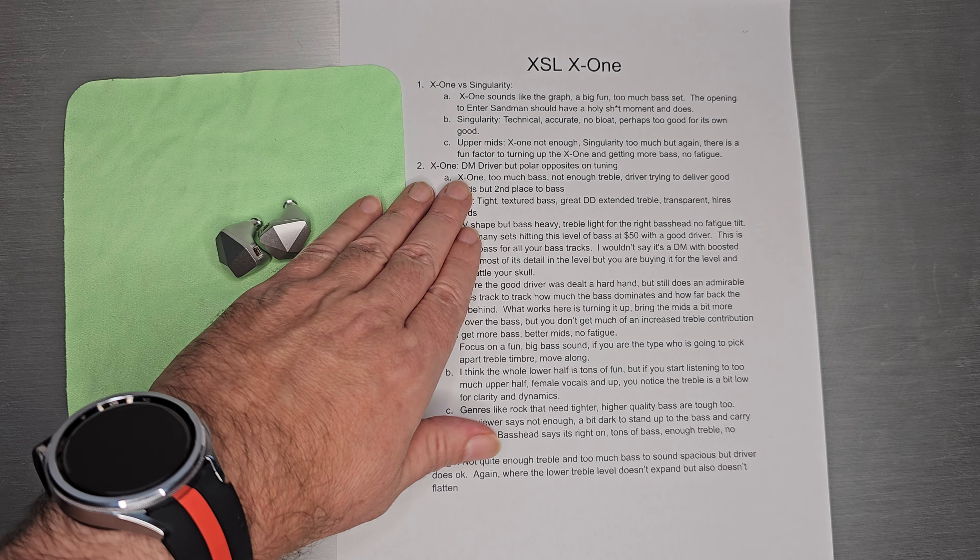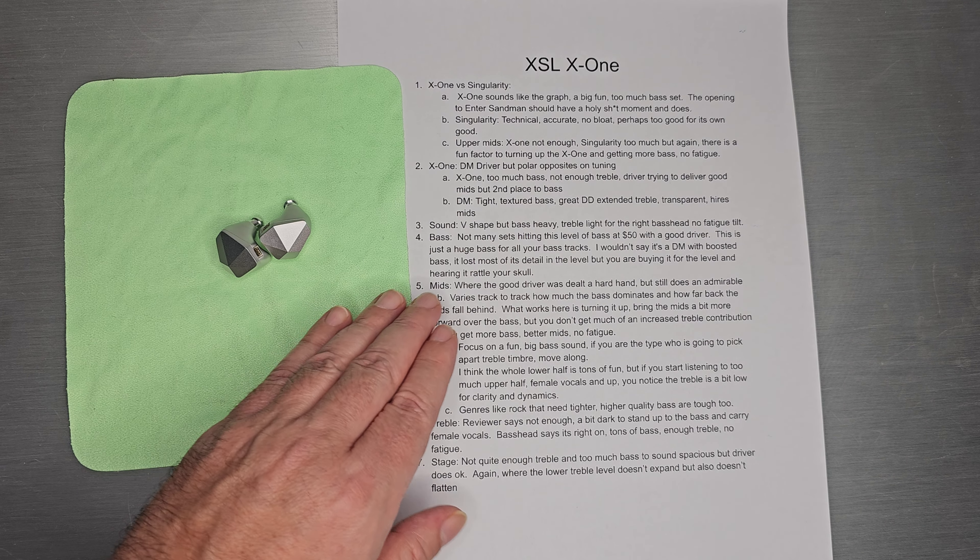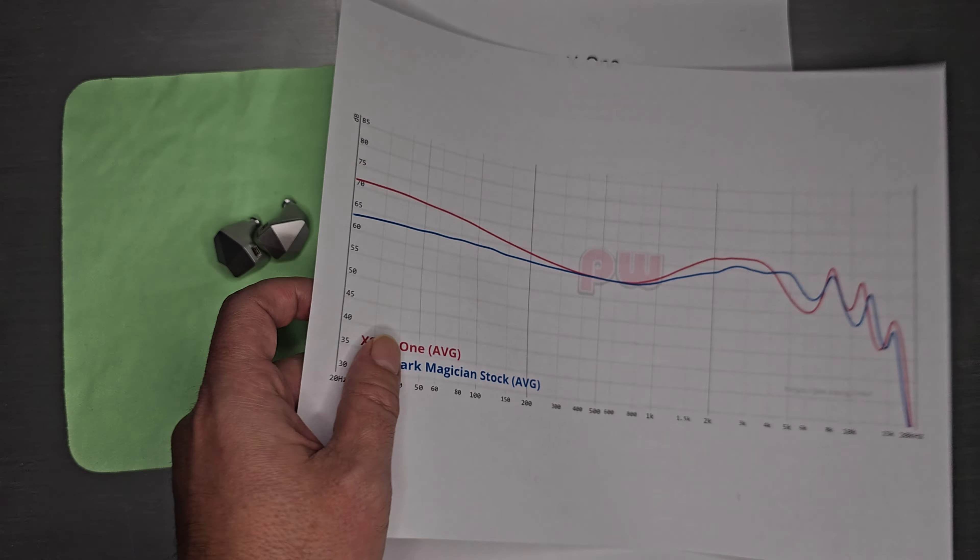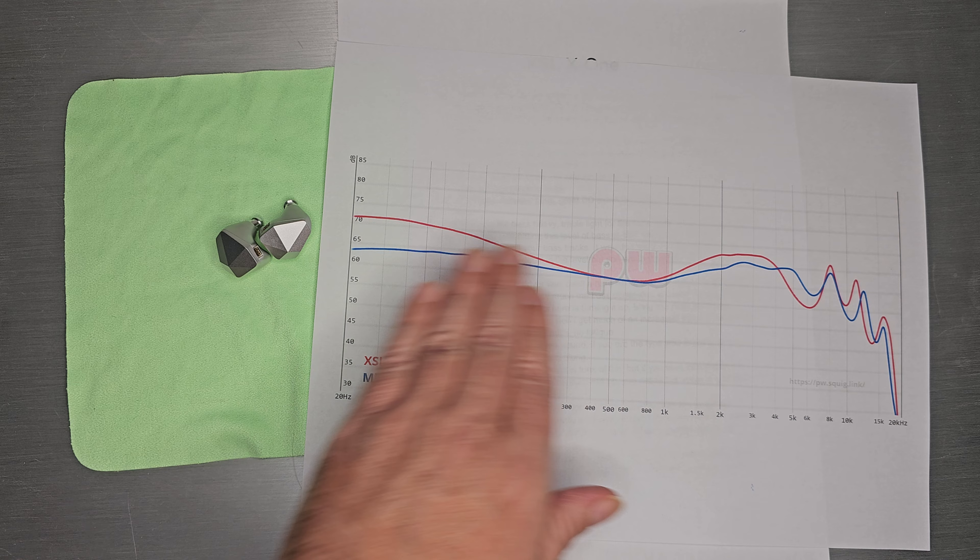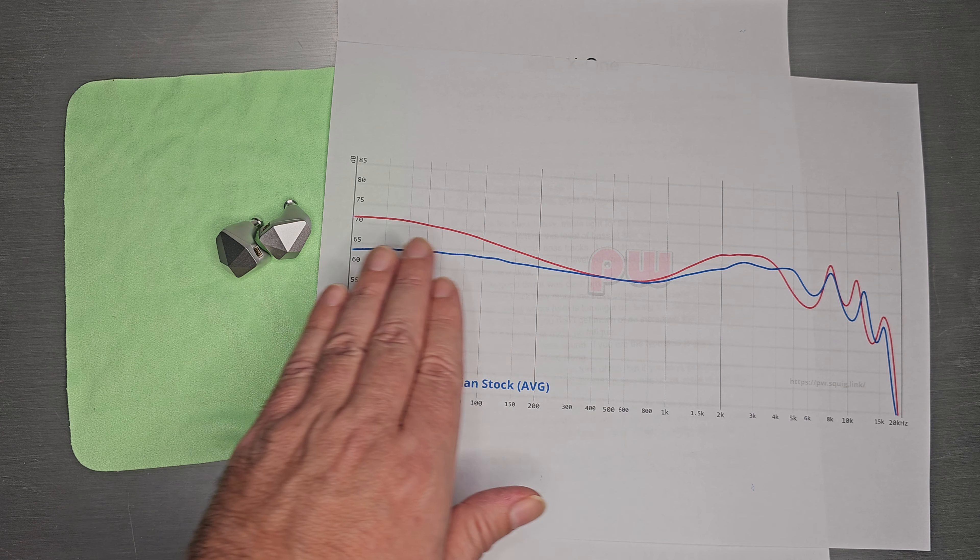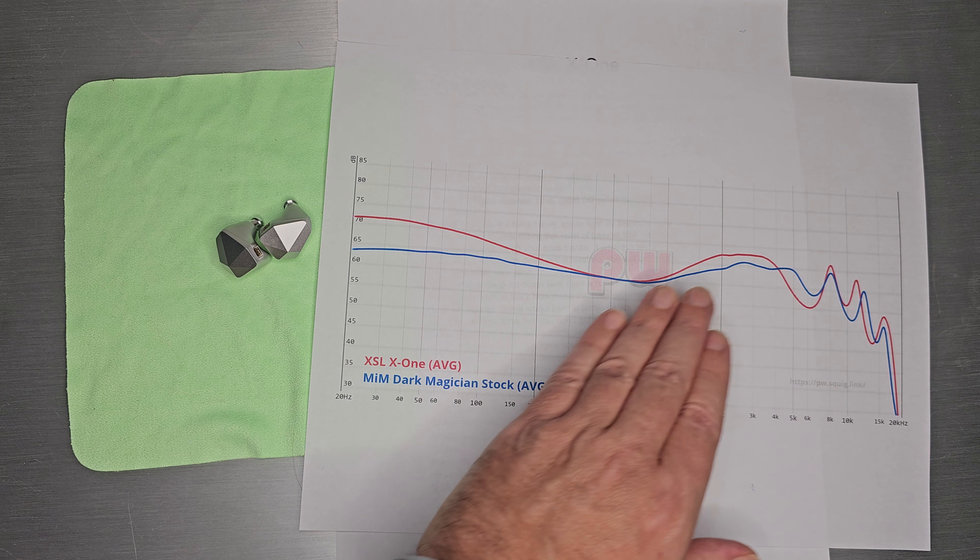So X-1 versus - why people are interested in the X-1. It does have the Dark Magician driver, but really polar opposites in tuning. So here is Dark Magician. It has this very neutral-ish bass curve, kind of a famous bass shelf and a kind of reduced upper mid version as well.